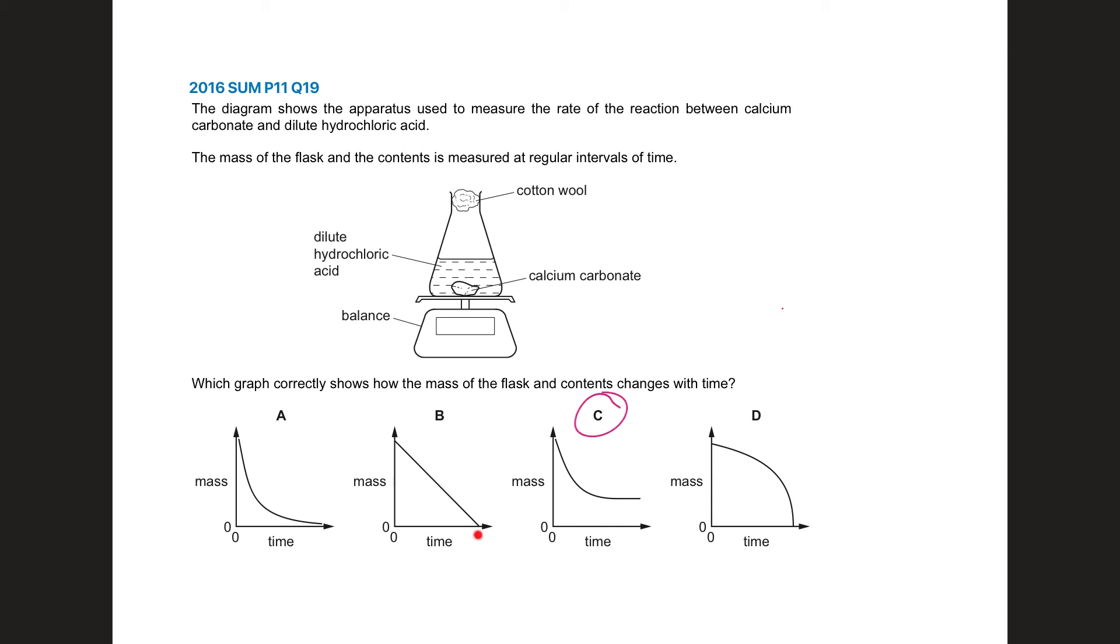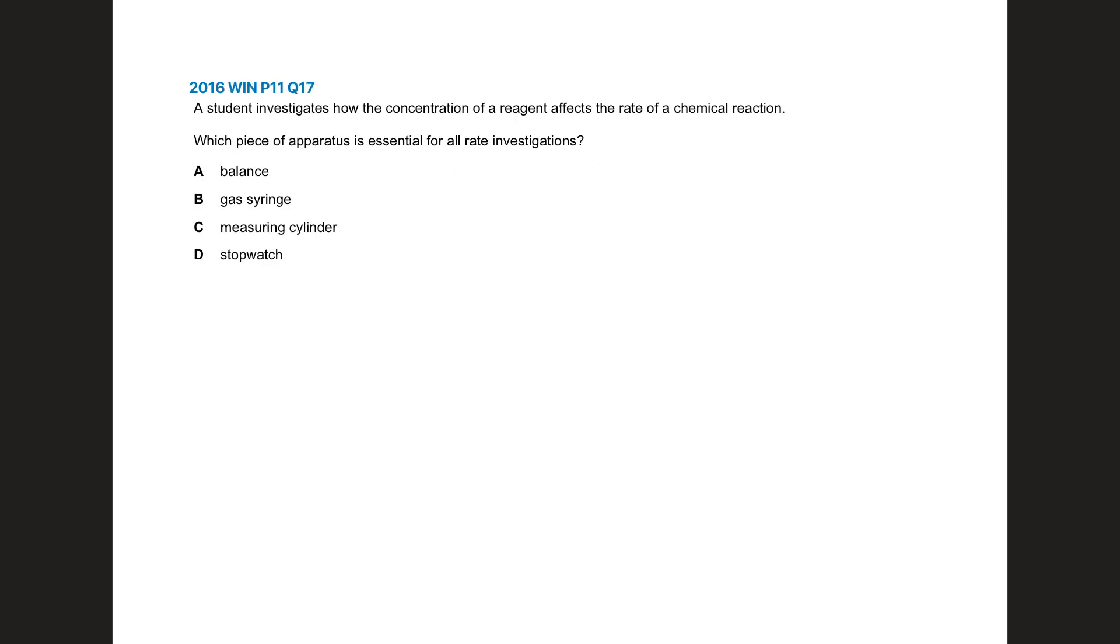For B it won't be a gradual decrease and D is the exact opposite of A and C where it says it's gonna start off really slow and just drop down very quickly. Nope. Which piece of apparatus is essential for all rate investigations? A balance, a mass balance? Well you can we've seen that done without it if you have a gas syringe. So A and B are kind of out. Measuring cylinder? I don't think we've ever used a measuring cylinder in any of our experiments. But stopwatch obviously. It's a straightforward question.